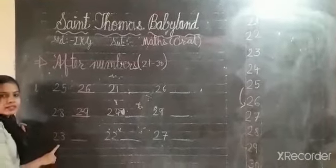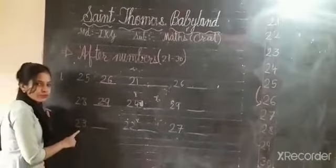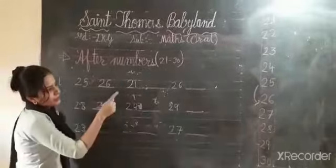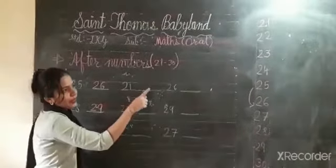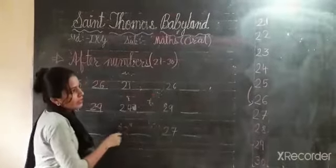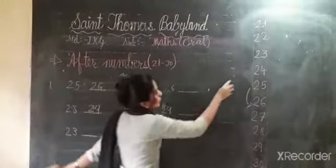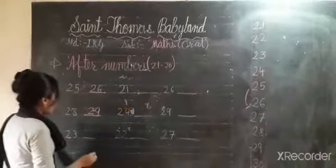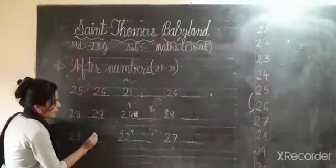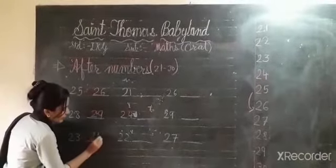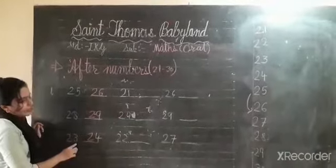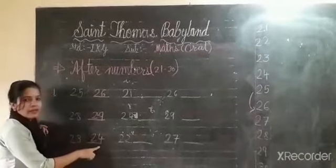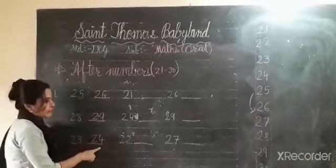See, what is this? This is 23. Now can you say after 23, what will come? 24. That means after 23 comes 24.